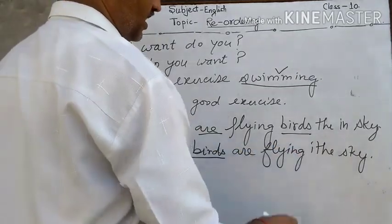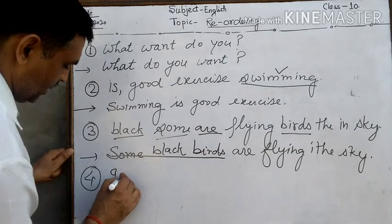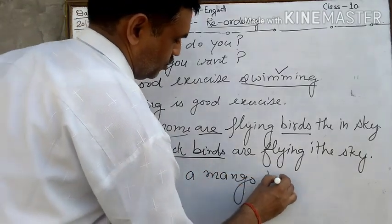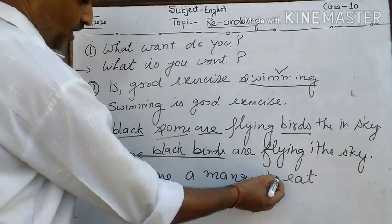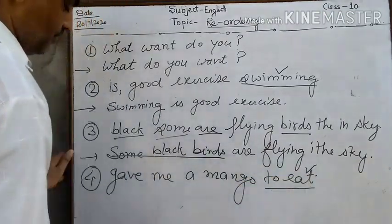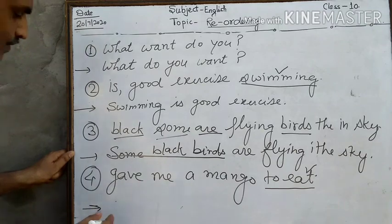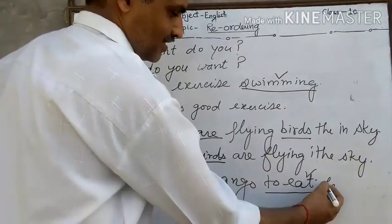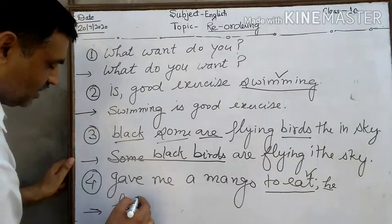Give me a mango to eat. Students, first of all we pick out subject part. 'To eat' is infinitive - we shall use it as a subject. Students, 'he' is subject. He gave me a mango to eat.